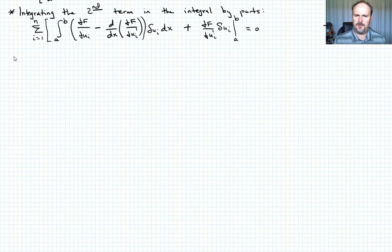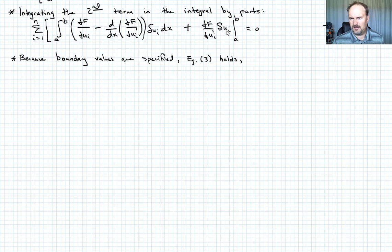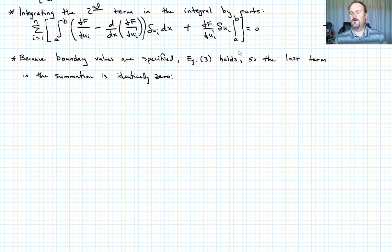So because boundary values are specified, equation three holds. And the upshot of that is that this last term in the summation, and that means that these all delta ui terms are zero, so this term goes away, okay? So the last term in the summation is identically zero, and I probably should close our bracket here so I can actually define where that summation ends.